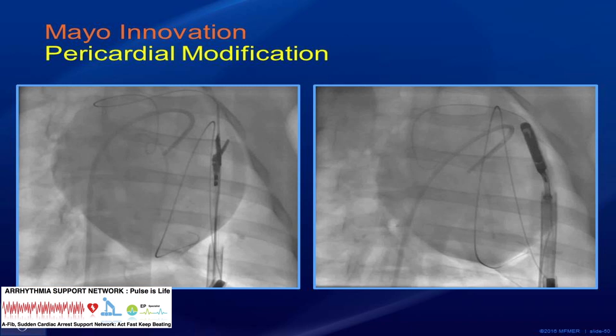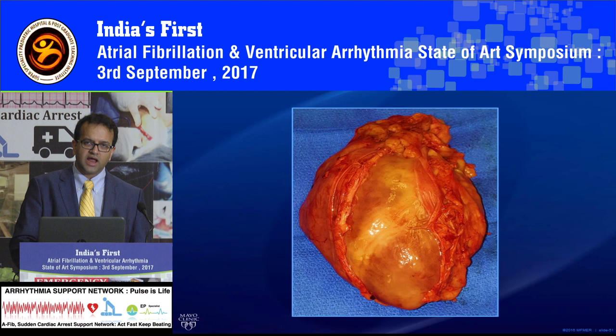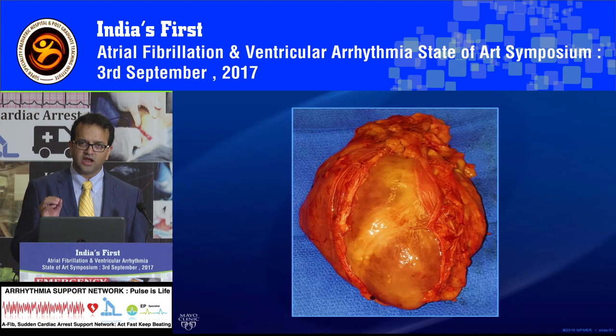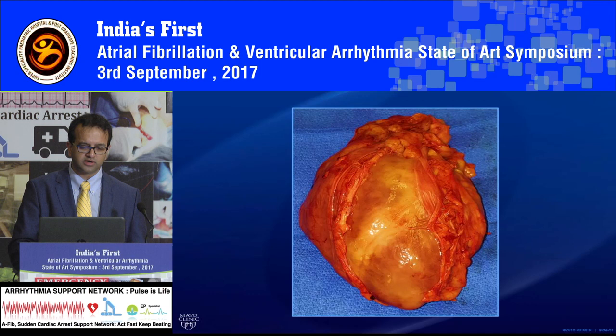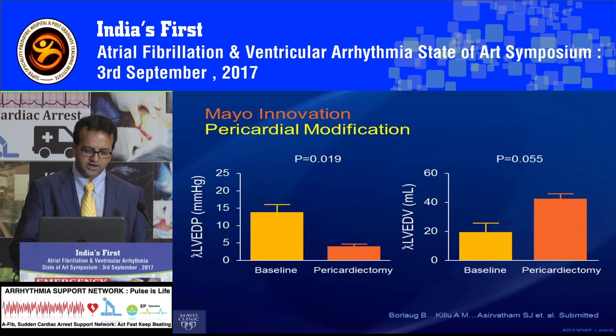The first is pericardial modification. In restrictive cardiomyopathy or severe diastolic dysfunction, the ventricle is extremely stiff. You can access the pericardial space and remove some of the pericardium, because the pericardium acts as a constraint on the stiff left ventricle. Despite maximizing diuretics and antihypertensive medicines, nothing really works for these patients. Initial work has shown that stripping some of the pericardium can release this constraint and lead to symptomatic improvement.